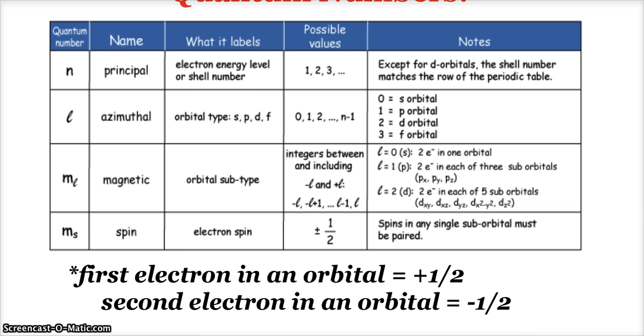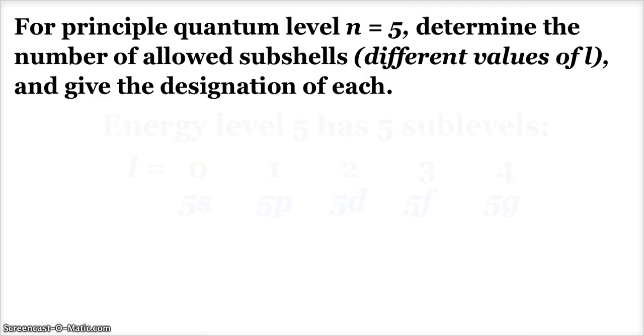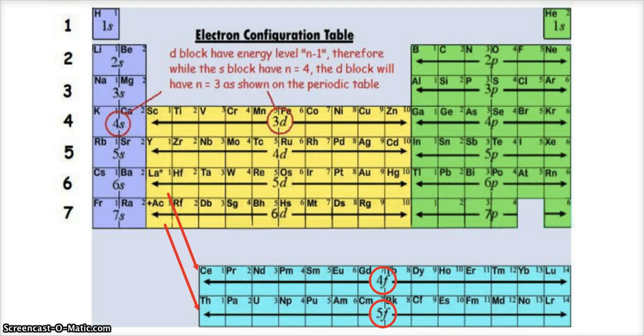Let's look at a few problems that involve this. First, for principal quantum level N equals five, determine the number of allowed subshells, the different values of L, and give the designation of each. If we're looking at our periodic table, we can see the different sublevels for an energy level. Each row we can talk about as being an energy level. Energy level one only has an S sublevel. Energy level two has 2S and 2P, two sublevels.